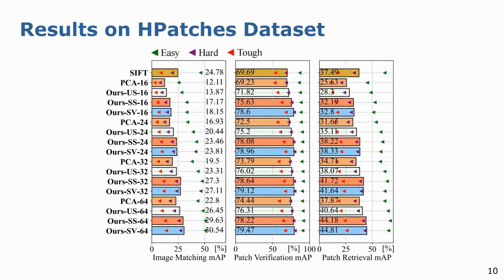Here are the results on the HPatches dataset. This experiment shows more robotics applications using our dimensionality-reduced features, including patch pair verification, image matching, and patch retrieval tasks. Our methods with supervised and self-supervised learning schemes perform better than PCA and autoencoder for all three tasks and all lower dimensions with a large margin. We also observe that the 64-dimensional descriptors generated by our method even outperform the original 128-dimensional descriptors.